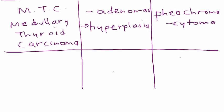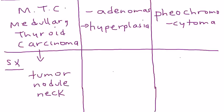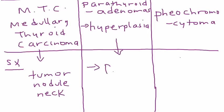The presentation of the medullary thyroid carcinoma will likely just be a tumor or nodule in the neck, as seen in the diagram. The presentation of the parathyroid adenomas relates to the hormone those glands produce — parathyroid hormone (PTH) — which increases calcium in the bloodstream.